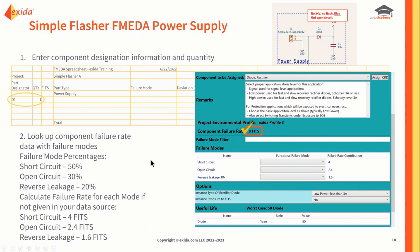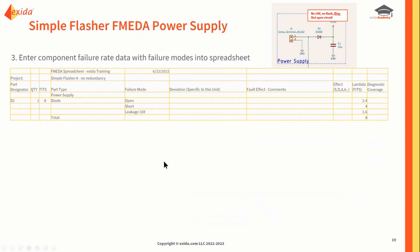We're going to enter the failure mode percentages and then calculate the failure rates per mode. Total failure rate: 8 FITs. The component failure modes are short circuit, open circuit, and reverse leakage. We've got everything we need — let's enter them into the spreadsheet. Here are the component failure modes, and over here are the failure rates.